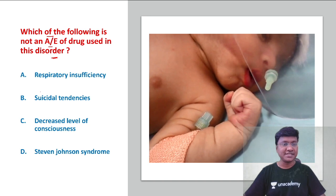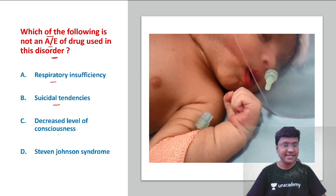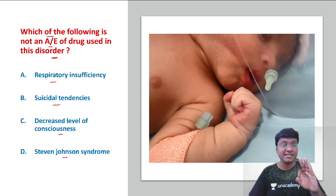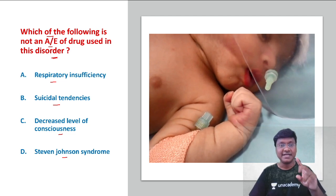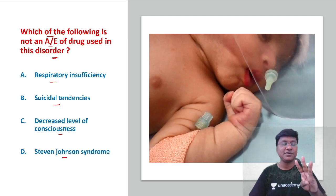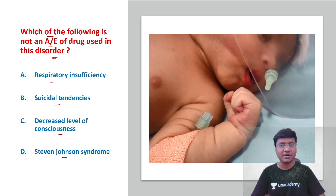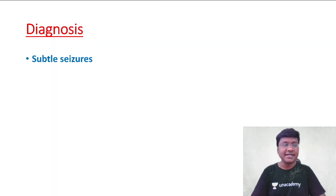The options are: respiratory insufficiency, suicidal tendencies, decreased level of consciousness, and Stevens-Johnson syndrome. There are three steps to this question: first, diagnose the disorder; second, identify the drug of choice; and third, know the adverse effects of that drug.